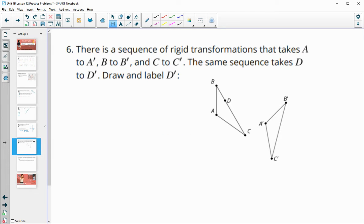Number six, there's a sequence of rigid transformations, meaning that everything stays the same size. That takes A to A prime, B to B prime, and C to C prime. The same sequence takes D to D prime. Draw and label point D prime. So we see that D is on segment BC. So we know D prime is going to be on segment B prime, C prime.